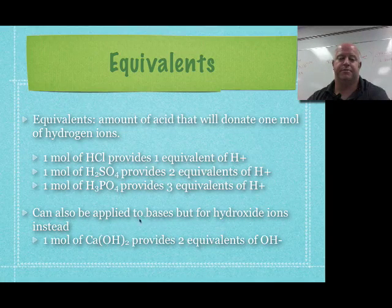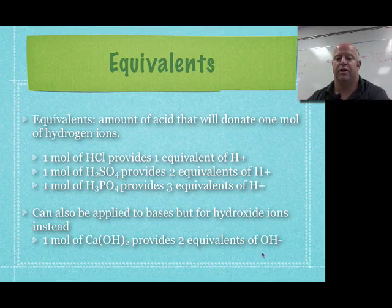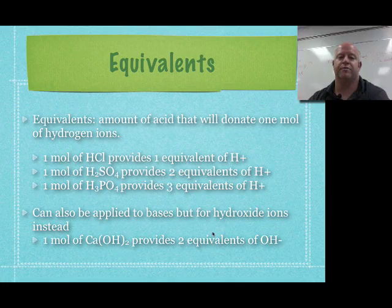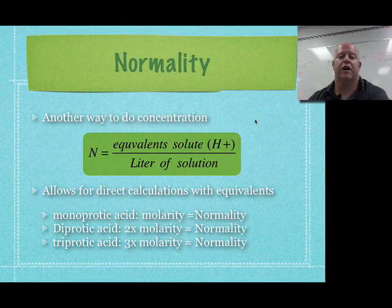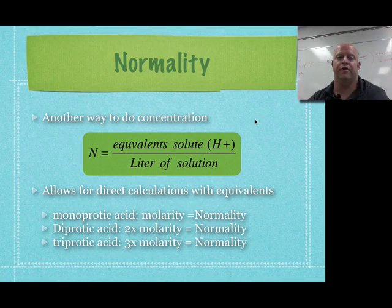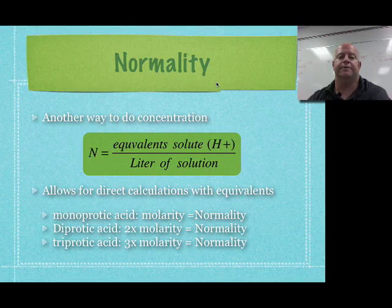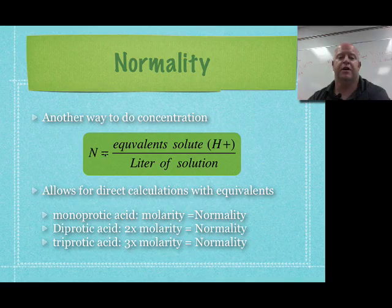You can also apply this to bases. For example, a mole of calcium hydroxide gives us two equivalents of hydroxide ions. So basically, you're looking for that subscript 2 or 3 for your different equivalents. Working with another form of concentration — we've done molarity, we've done molality — and now we have normality.